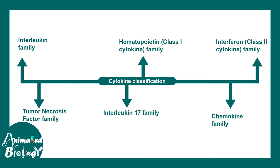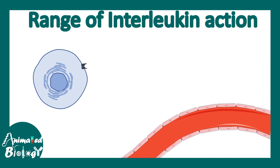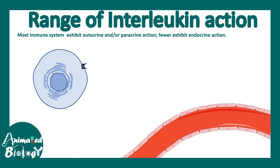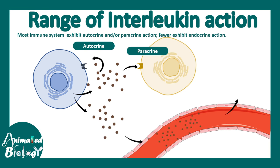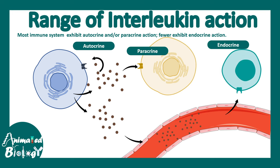Interleukins are one family member of the broad cytokine family. They can show autocrine, paracrine, or juxtacrine signaling. A cell can secrete an interleukin received by a nearby cell — that's paracrine. The same cell can respond to its own secreted interleukin — that's autocrine. More rarely, an interleukin can travel via the bloodstream to a distant organ — that's endocrine signaling.